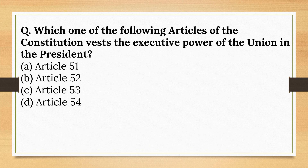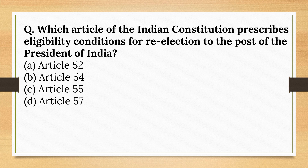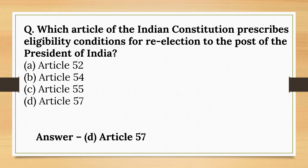Which one of the following articles of the Constitution vests the executive power of the Union in the President? This is Article 53. Which article prescribes eligibility conditions for re-election to the post of the President? This is Article 57.